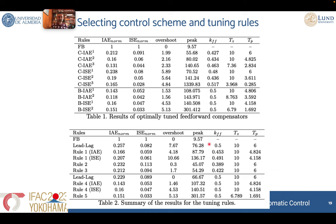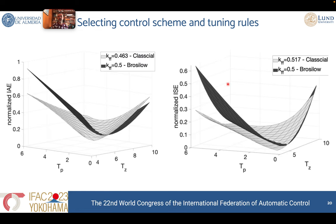Another interesting point is that all the rules suggest reducing the original values obtained by the classical tuning rule method for the feedforward compensator — by dividing the two dynamics presented at the beginning. We need to reduce the gain and reduce the pole or zero to improve behavior. Also, the ratio between the pole and the zero is important to obtain a proper closed-loop response. This can be observed in these 3D plots, where we represent the best values for the classical control scheme for both integral absolute error and integral square error metrics, and for the non-interactive scheme as well. We can observe that the optimal values in the two schemes are really close.